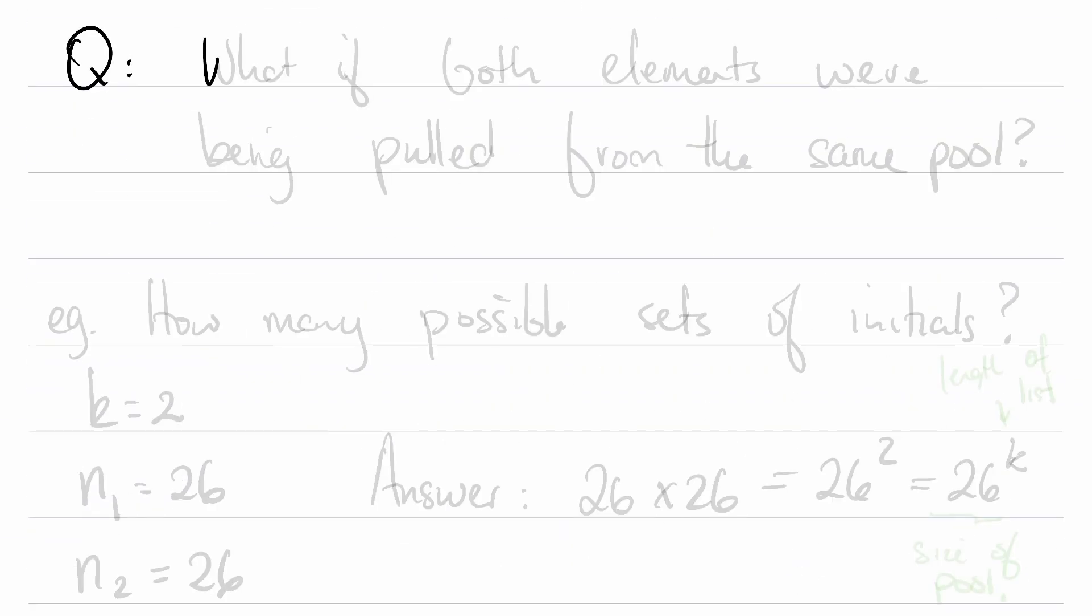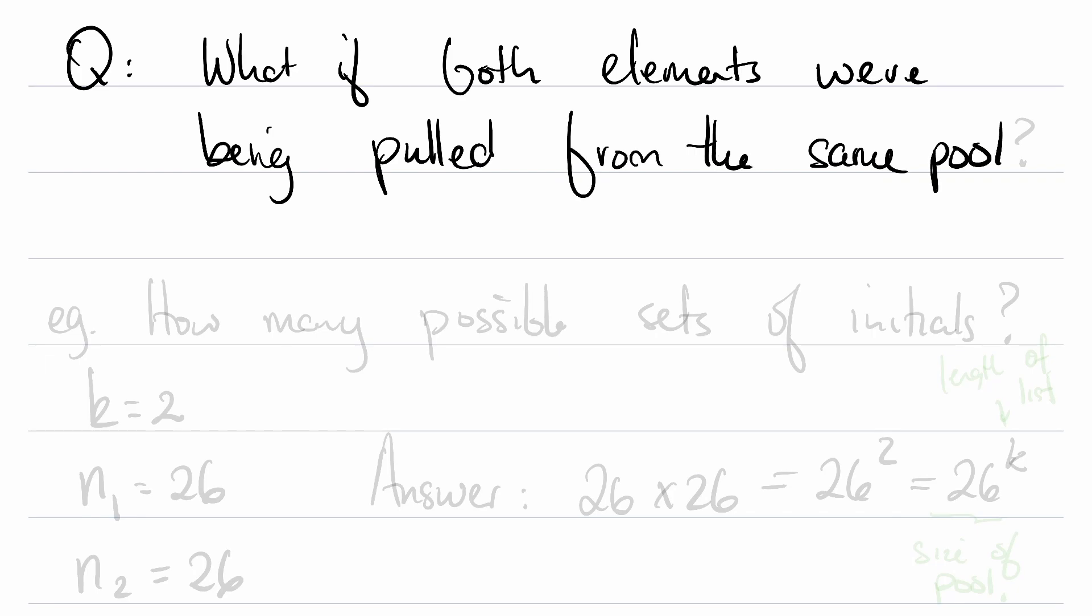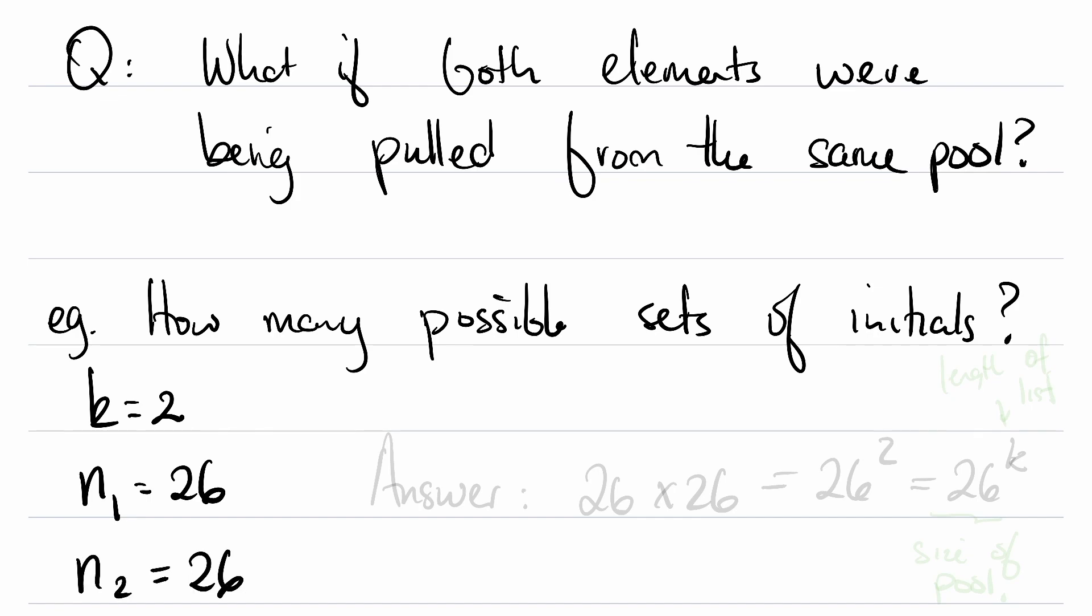Here's a complicating question: What if both elements were being pulled from the same pool? Before we had the first element being pulled from vowels, the second element being pulled from consonants. So an example of this is how many possible sets of initials are there? Well, we can use the multiplication principle. k equals 2. How many possibilities are there for the first initial? That's n_1. That's 26 because it can be any letter. How many possibilities are there for the second initial? This is n_2. That's also 26 since it also can be any letter. So the answer is 26 by 26, which is 26 squared. Also 26 to the k, where k is the length of the list, and 26 was the size of the pool.